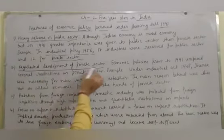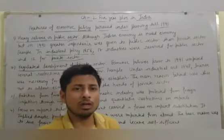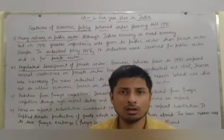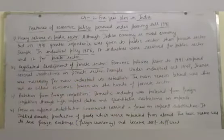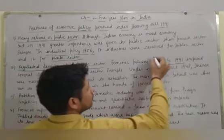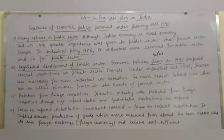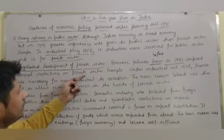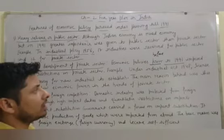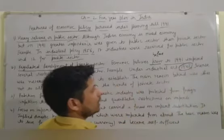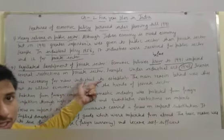The second feature is regulated development of private sector. Regulated means under control — development of private sector in a controlled way. Economic policies prior to 1991 imposed several restrictions on the private sector. For example, under the Industrial Act 1948, a license was necessary to establish a new industrial unit.